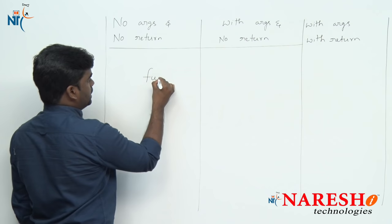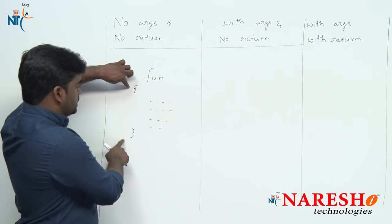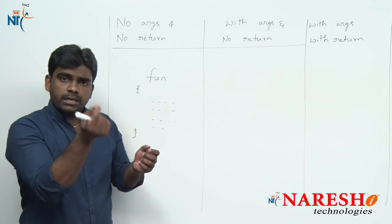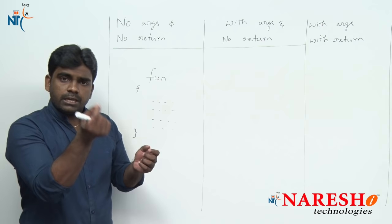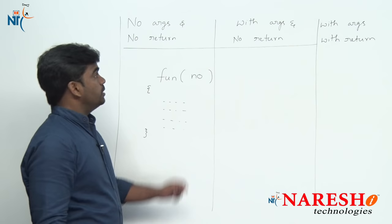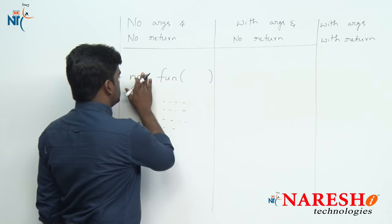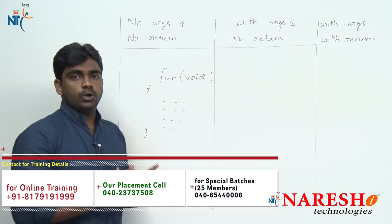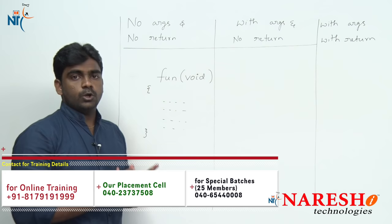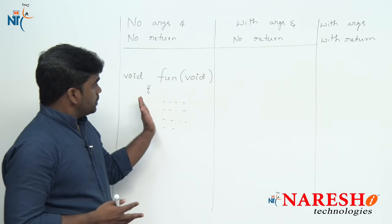For the first classification — no args and no return values — I am writing one function, just naming it 'fun'. It is a block of instructions. Here you write the logic. The function has an arguments place and a return values place, but for this classification we write no arguments and no return values. In programming languages, 'void' is the technical keyword representing nothing — no arguments, no return values.